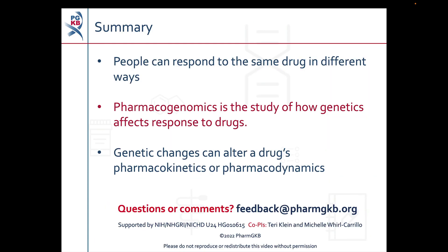In summary, we know that people can respond to the same drug in different ways, and that one of the factors that can cause this is genetics. Pharmacogenomics is the study of how genetics affects a person's response to drugs. Genetic changes can alter a drug's pharmacokinetics or pharmacodynamics. Thank you for watching this video. You can find links to further information or other useful videos in the description below.